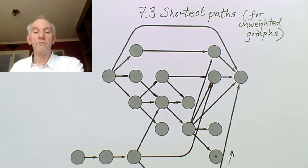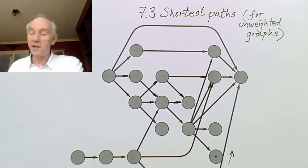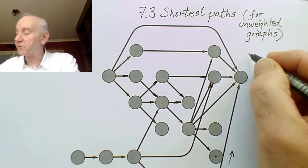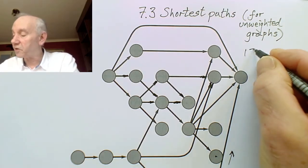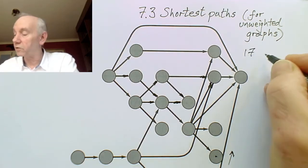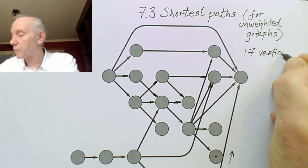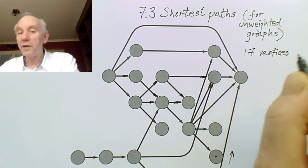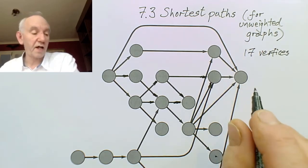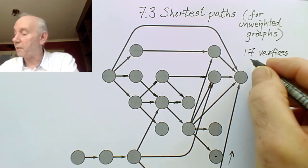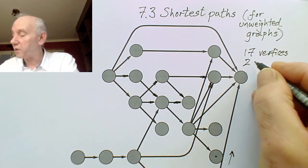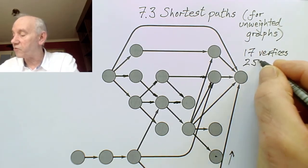Now this graph actually has, you can see all the vertices as I said, and it actually has 17 vertices. So let's record that: 17 vertices. And I believe it has — I made a mistake before — I believe it has 25 edges.